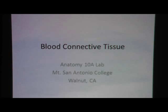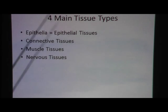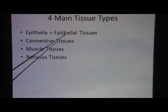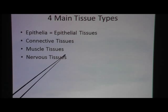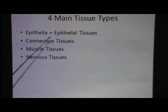Blood connective tissue. These slides are made for Anatomy 10A lab at Mount San Antonio College. The four main tissue types that we have in the body are epithelial tissue, connective tissues, muscle tissues, and nervous tissue. Right now, I'm going to focus on connective tissues.